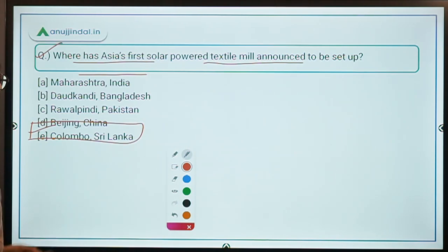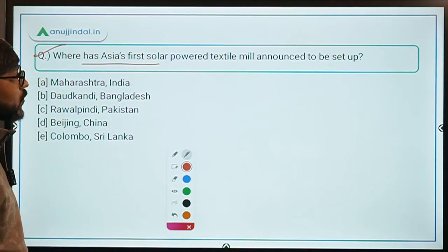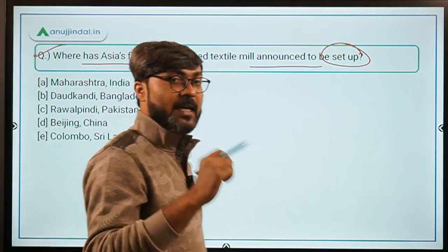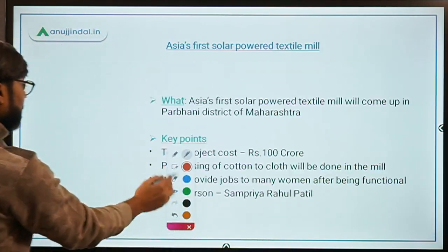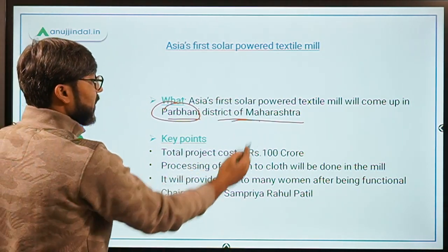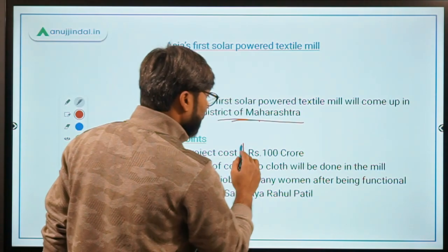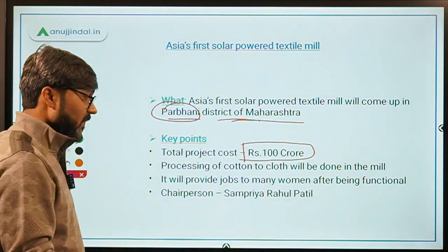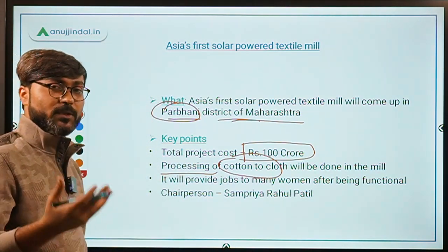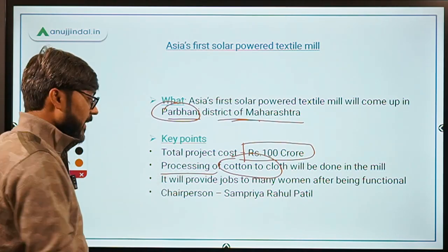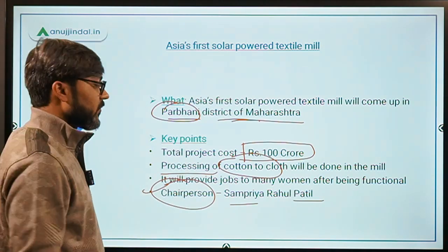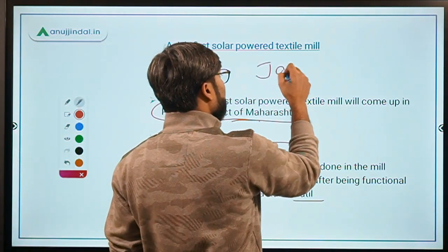Question number 5: Asia's first solar-powered textile mill is announced to be set up in Parbhani district of Maharashtra, with a total project cost of ₹100 crore. The mill will carry out processing of cotton to cloth and will provide jobs to women after functioning. The chairperson will be Sampriya Rahul Patil, and the name of the mill is Jai Bhavani Co-operative Textile Mill.